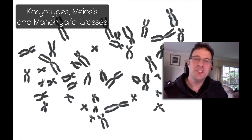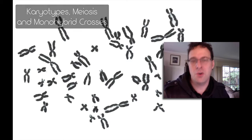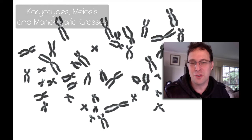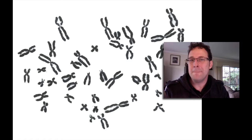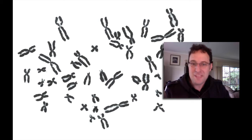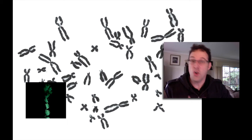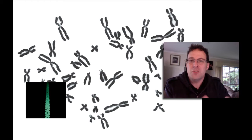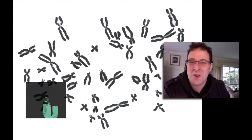In this screencast, I want us to explore the relationship between karyotypes, meiosis, and monohybrid crosses. What you're looking at on the screen is a photograph taken of a human cell just prior to metaphase in mitosis. At this point, the DNA is condensed — it's coiled and supercoiled — and the chromosomes have taken on that familiar X-shaped structure that we associate with a chromosome.